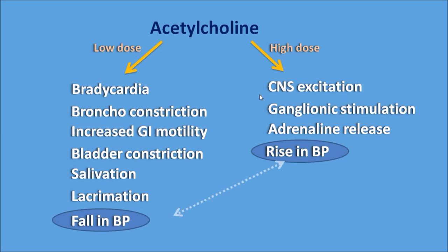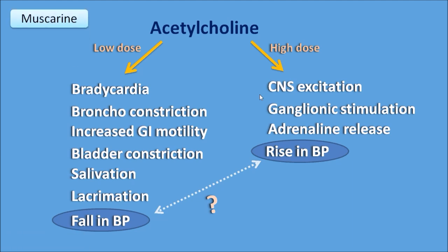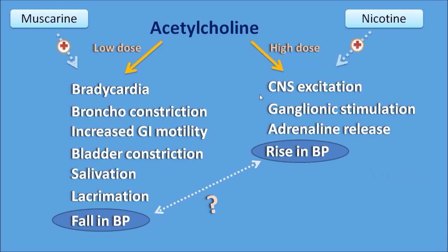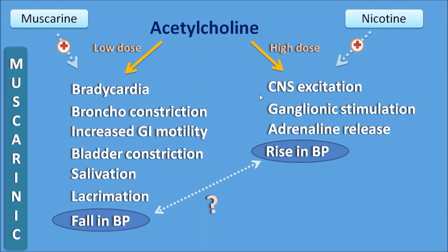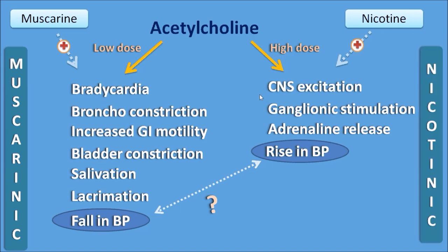So why does acetylcholine produce quite opposite actions at low dose and at high dose? It was observed that the low dose actions of acetylcholine are reproduced by muscarine, and the high dose actions are reproduced by nicotine. Since those actions are reproduced by muscarine, they are called muscarinic actions, and the other set reproduced by nicotine are called nicotinic actions.